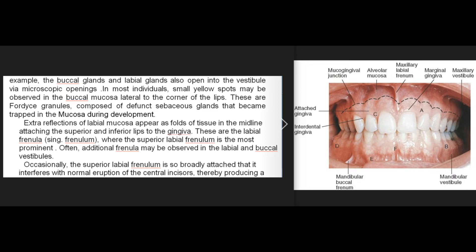These are Fordyce granules, composed of defunct sebaceous glands that became trapped in the mucosa during development. Reflections of labial mucosa appear as folds of tissue in the midline attaching the superior and inferior lips to the gingiva; these are the labial frenula (singular: frenulum), where the superior labial frenulum is the most prominent. Often additional frenula may be observed in the labial and buccal vestibules.